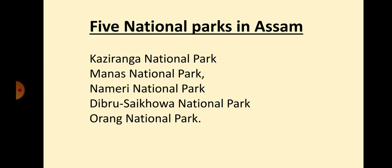Today you will know about five national parks in Assam. The national parks in Assam are: Kaziranga National Park, Manas National Park, Nameri National Park, Dibru-Saikhowa National Park, and Orang National Park.